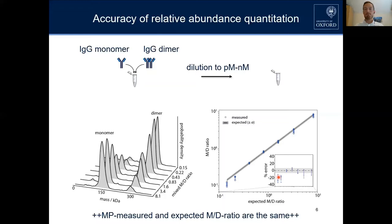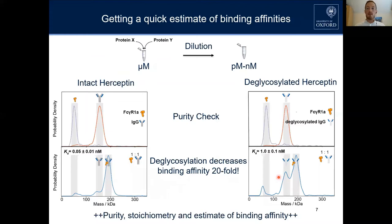From then on, we went on to quantify binding affinities. Quantifying binding affinity in our case means knowing how much free species we have and how much complex species we have, in order to calculate the KD value which represents binding affinity.